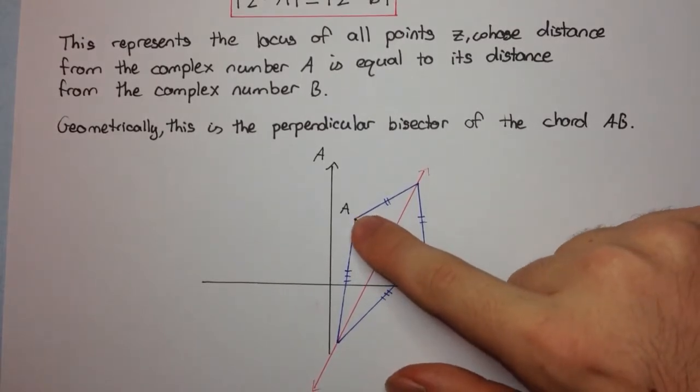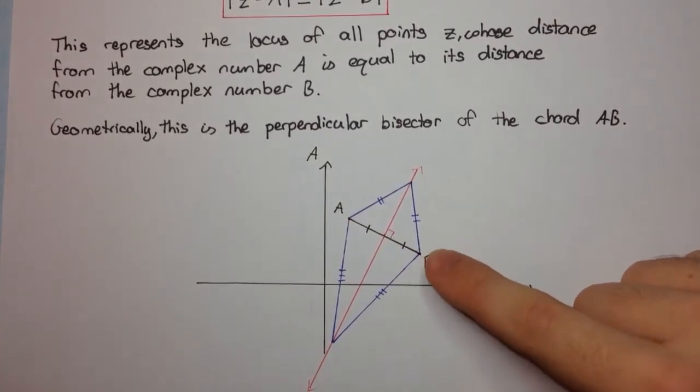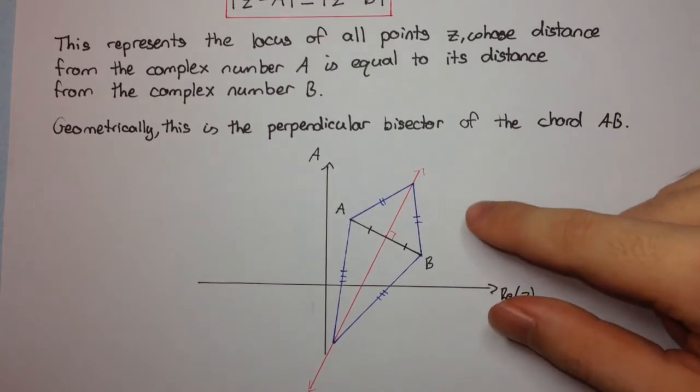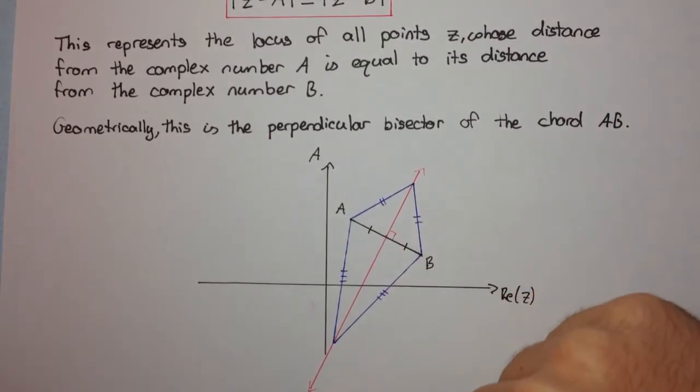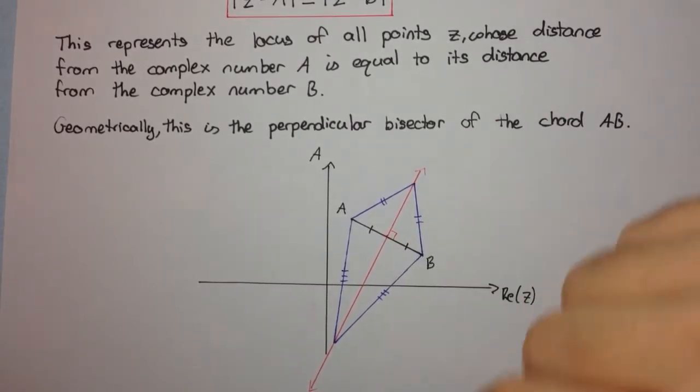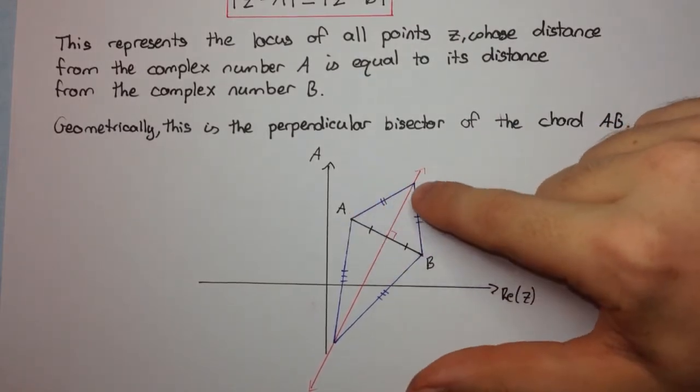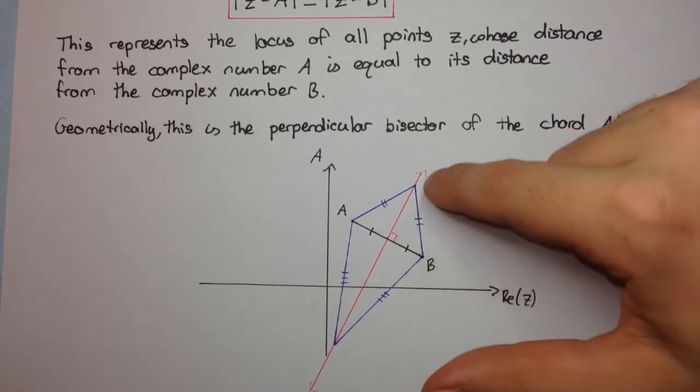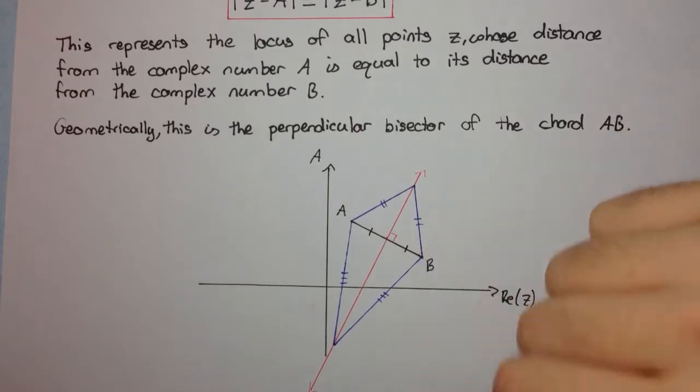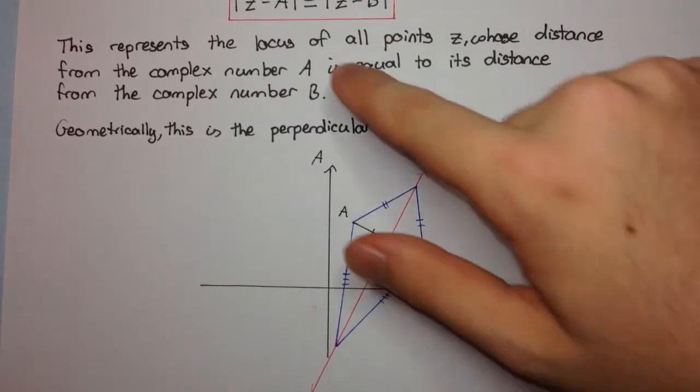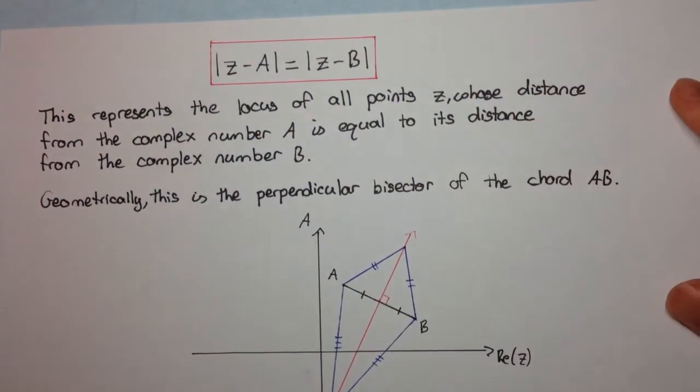So here we have our point a, and here we have our point b, and we draw a chord that joins the two points ab. Now any point that is the same distance from a and b lies on this line in red. This is the perpendicular bisector of this chord right here. So as you can see, if you draw lines from the point a to this red line, or from the point b to the red line, any point on the red line, these two lengths here will be equal. And so, the perpendicular bisector of the chord ab is the geometrical representation of this standard form of a locus.